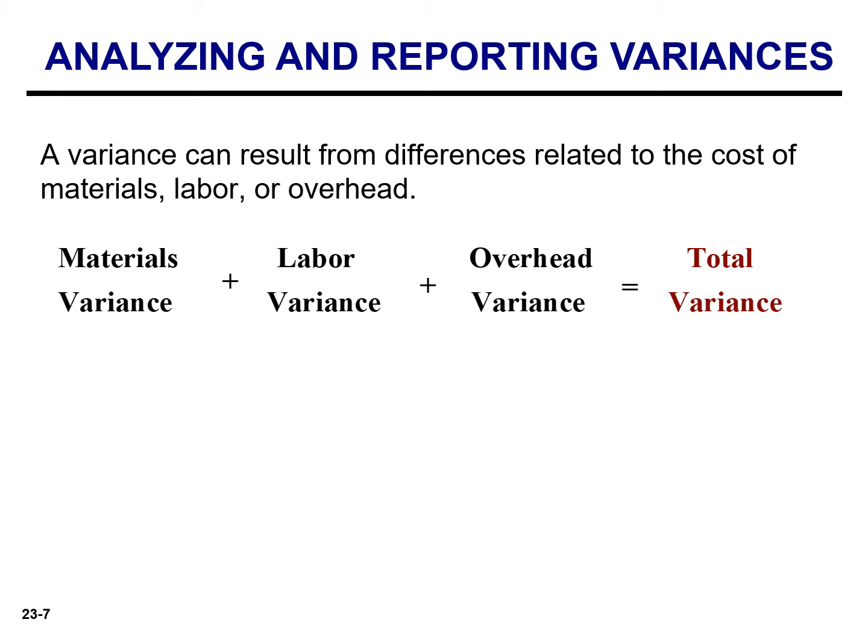So we can explain the variance of $3,000 by analyzing our materials, our labor, and our overhead variances.